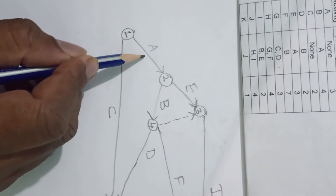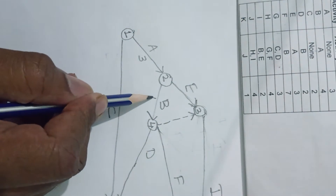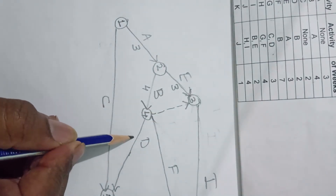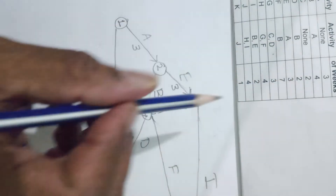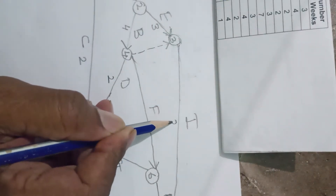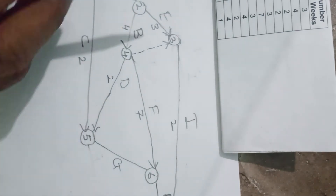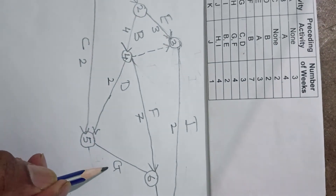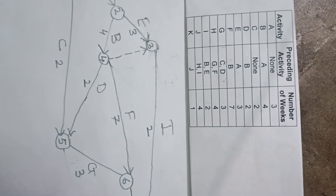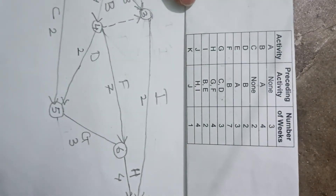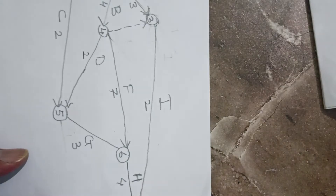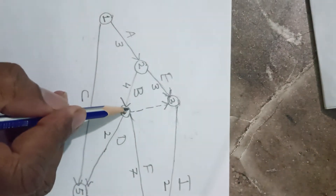A is taking 3 weeks, B is taking 4 weeks, E is taking 3 weeks, D is taking 2 weeks, C is taking 2 weeks, I is taking 2 weeks, F is taking 7 weeks, G is taking 3 weeks, H is taking 4 weeks, J is taking 4 weeks, and K is taking 1 week. We have captured all the durations of all the activities.